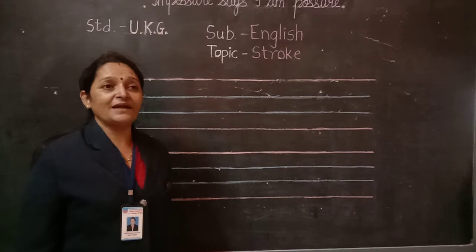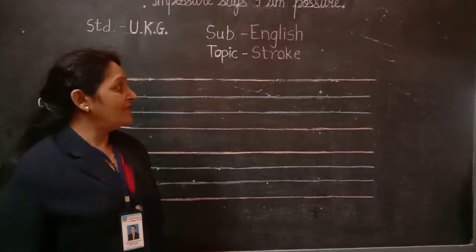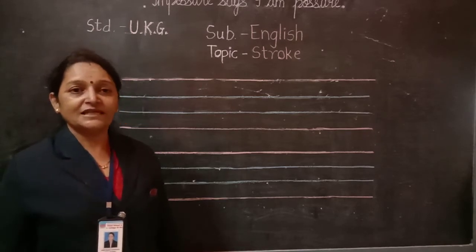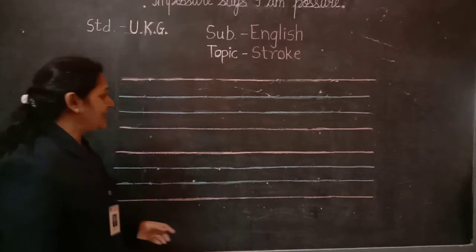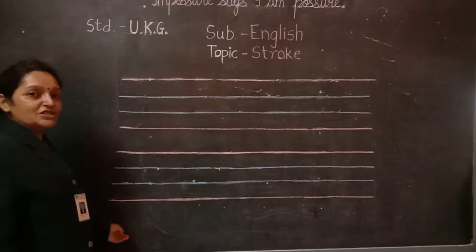Yesterday we learned capital and small cursive A to D. Today, after D, which letter comes? E. Capital and small cursive E with the help of stroke.